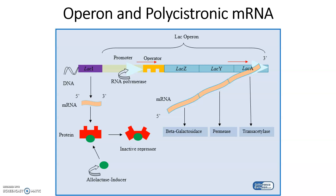Bacteria genes tend to be arranged in operons — two or more genes under the control of a single promoter. These genes are all transcribed together and create a polycistronic mRNA that encodes several different proteins. Bacteria have small genomes with very limited space, so they maximize efficiency by reducing the number of promoters. All of these genes work together in the same pathway, so if we need one, we need all. It's more efficient to transcribe them all under one promoter rather than having separate promoters for lacZ, lacY, and lacA.